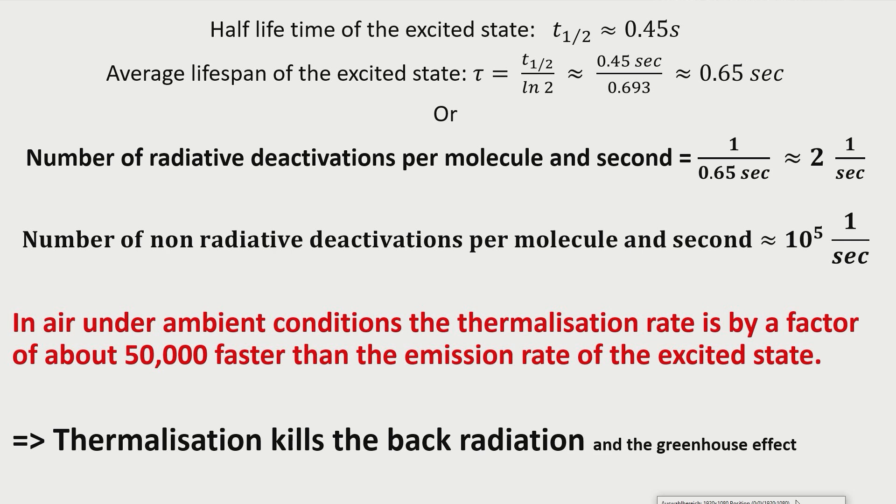As a result of this rough calculation we can say, that at atmospheric pressure and ambient temperature, the thermalization of the excited state of the CO2 bending vibration, is by 4 to 5 orders of magnitude faster than the emission from this excited state.